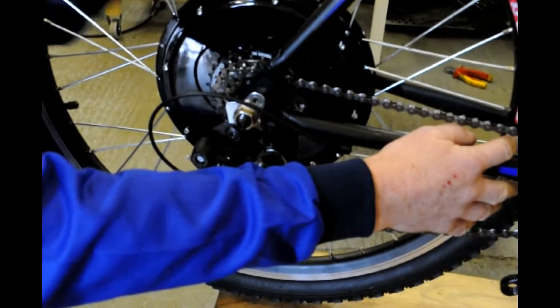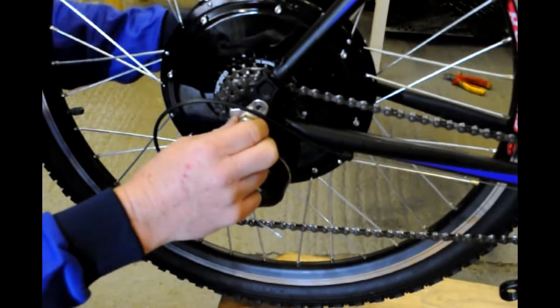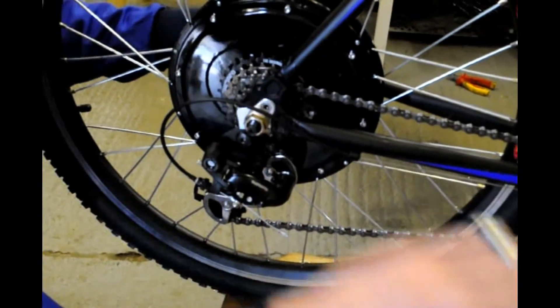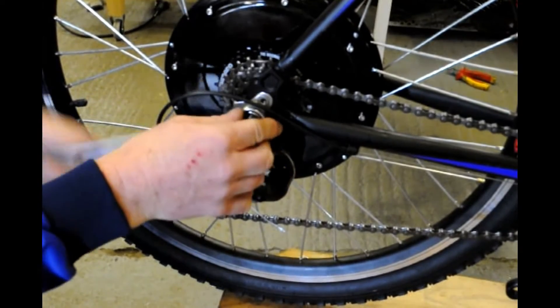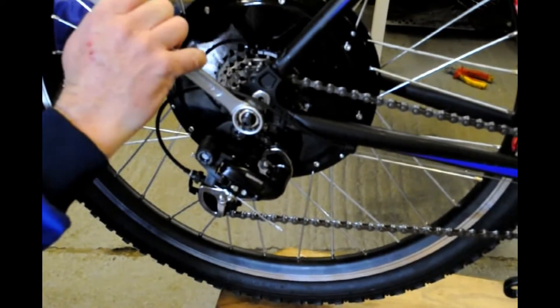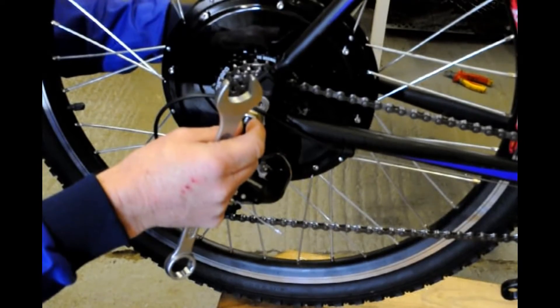When you are happy that your wheel is central and right up you need to tighten both of these nuts. Sometimes you may find it better to drop the bike on the floor to put the pressure to push the hub up.